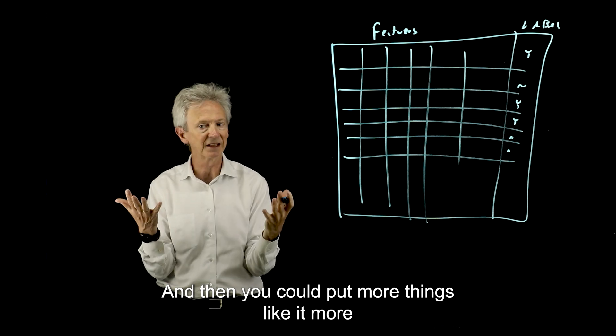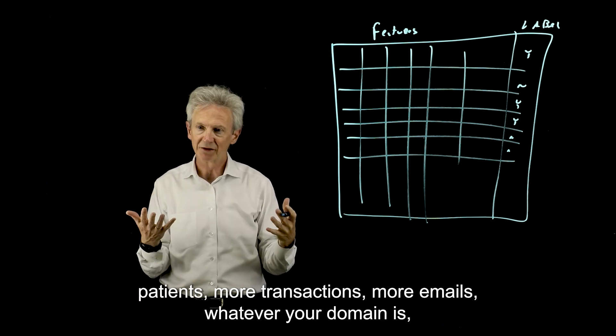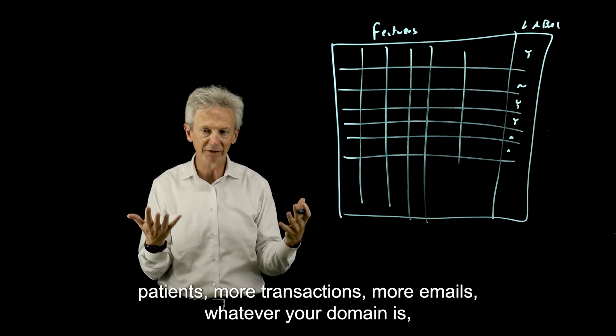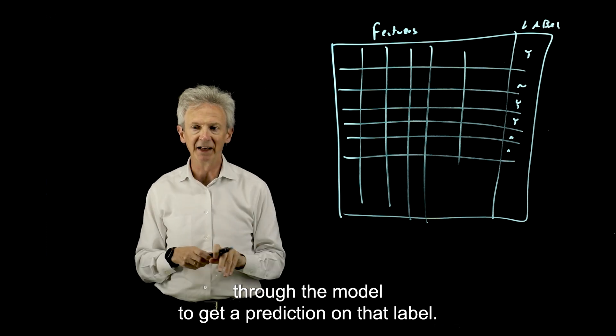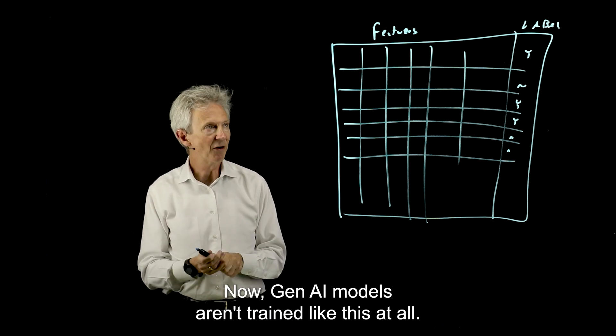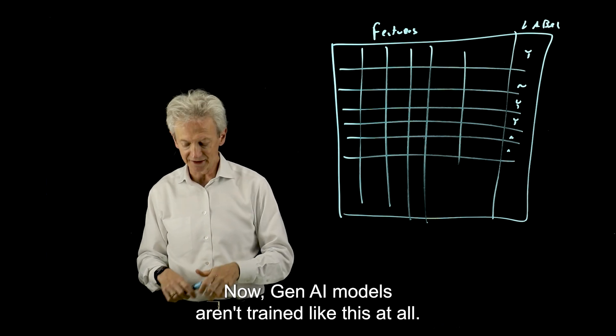And then you could put more things like it, more patients, more transactions, more emails, whatever your domain is, through the model to get a prediction on that label. Now, Gen AI models aren't trained like this at all.